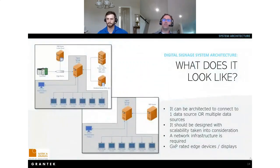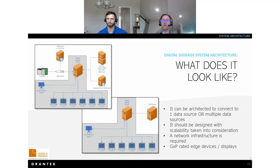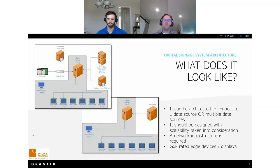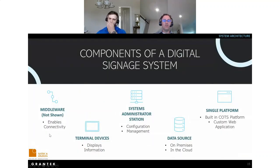A digital signage architecture might show a combination of on-premise systems, databases, and a cloud-based system all pushing data to the digital signage server, or a single MES system sending its data across. A key point is that the system should be designed with scalability in mind — you should be able to add terminals or new data sources in the future. In the manufacturing space, you need network infrastructure including ethernet drops and power drops or PoE drops for each terminal. If placing a display in a clean room, you need a GxP-rated device — we like to use the Modi from Systech and Solutions.